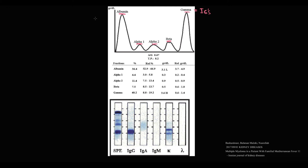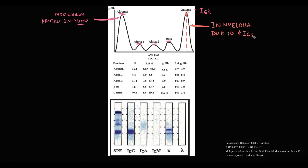As we know, the most common protein in the blood is albumin. But in case of mutation in plasma cells, they begin to produce a huge amount of monoclonal immunoglobulin, causing a huge increase in the gamma fraction. Such a severe increase in the gamma region is called M-spike — M stands for monoclonal.